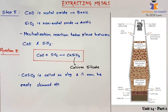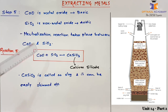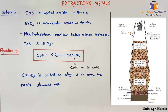Here we have seen how we turn iron oxide into iron. Note that the iron obtained from the blast furnace is called pig iron. This pig iron is not 100% pure yet, as it still contains some impurities of silica and carbon. Pig iron is almost pure, but it is hard and brittle.